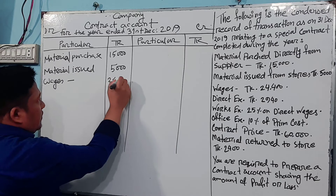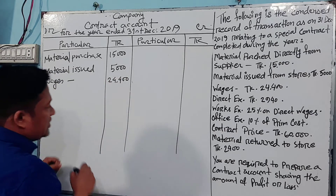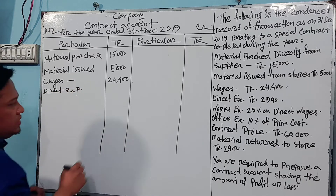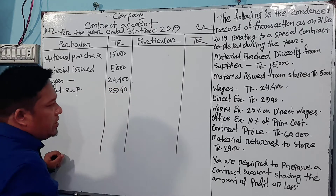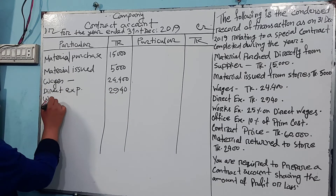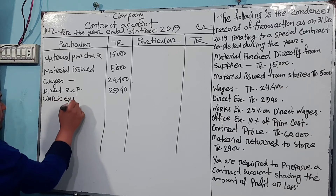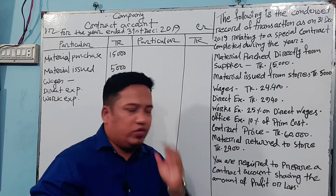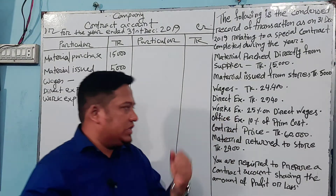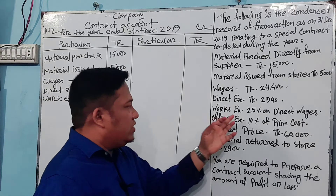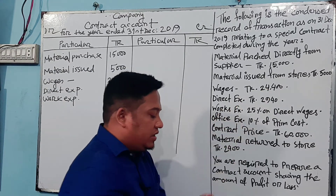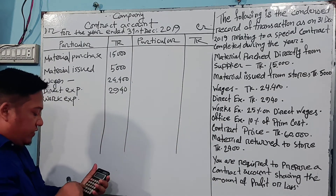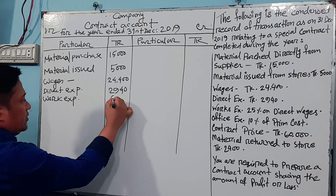Wages are Taka 24,400. Next, direct expenses: Taka 2,940. Works expenses are 25% on direct wages. Direct wages are Taka 24,400, so works expenses = 24,400 × 25% = Taka 6,100.